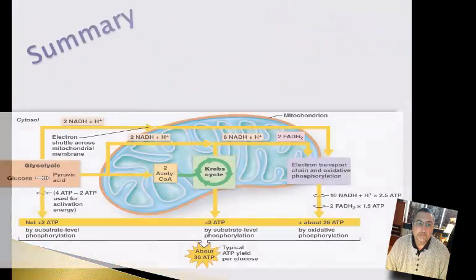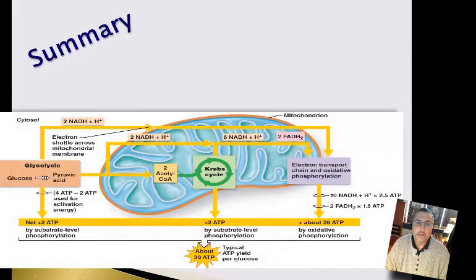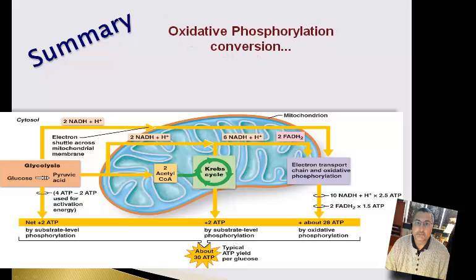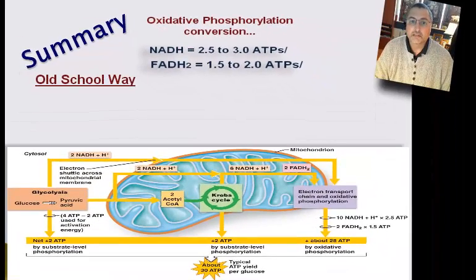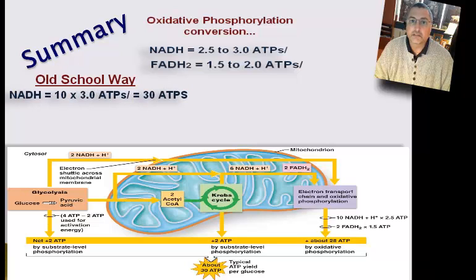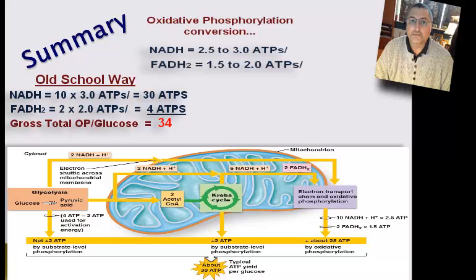Now let's summarize the set of events. At the end of the electron transport chain in oxidative phosphorylation, each of the NADH and FADH2 molecules have been converted to energy. In the case of NADH, it will be converted into 2.5 to 3 ATP molecules. Each FADH2 molecule will be converted into 1.5 to 2 ATP molecules. For our initial example we will use the higher values: 10 NADHs convert to 30 ATPs at 3 ATPs per NADH, and 2 FADH2 molecules convert to 4 ATPs, for a net total of 34 ATPs.